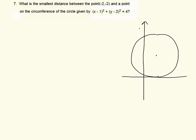We are asked to find the smallest distance between a point and a circle. First, let's start by sketching a circle with center (1, 2). Let's label C as the center of the circle. Now let's sketch the point A at negative 2, negative 2.